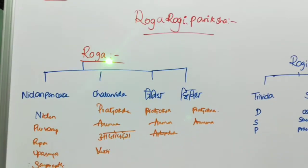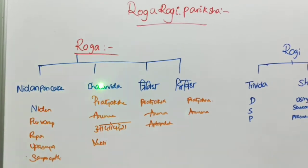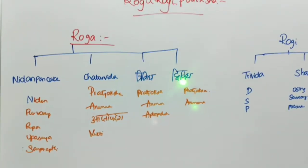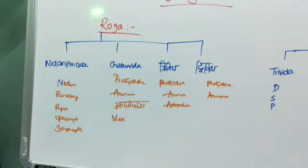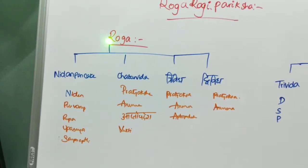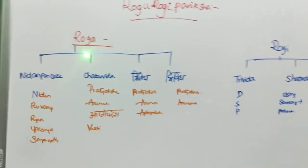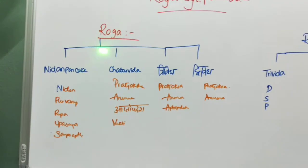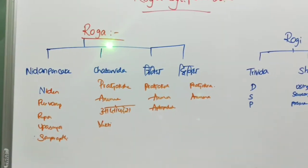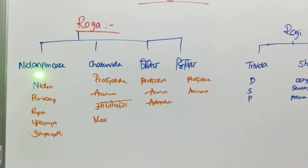Roga means disease. The disease must be clearly known by these factors: Nidana Panchaka, Cheturvidha Pariksha, Trividha Pariksha, and Vividha Pariksha — these are the Roga Pariksha. In general we may confuse Roga and Rogi Pariksha, so here we will first deal with Roga Pariksha.